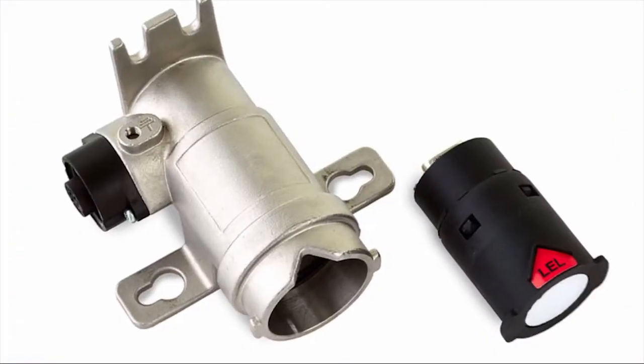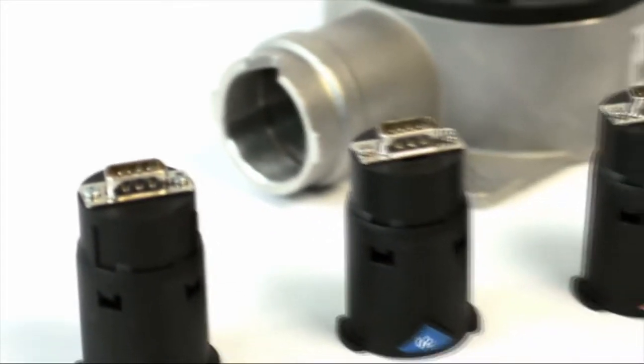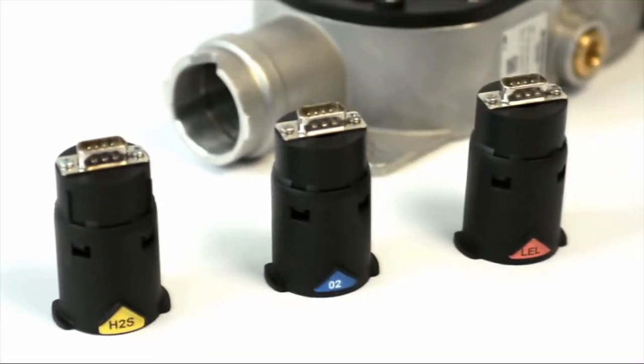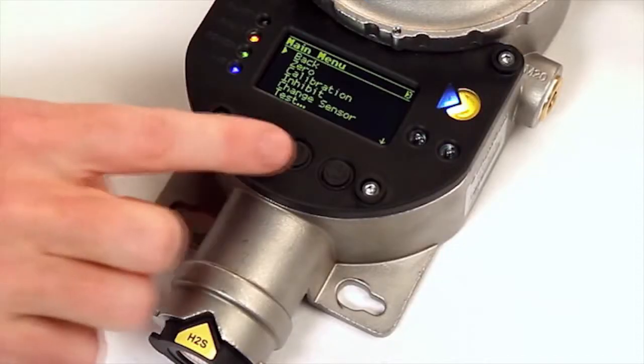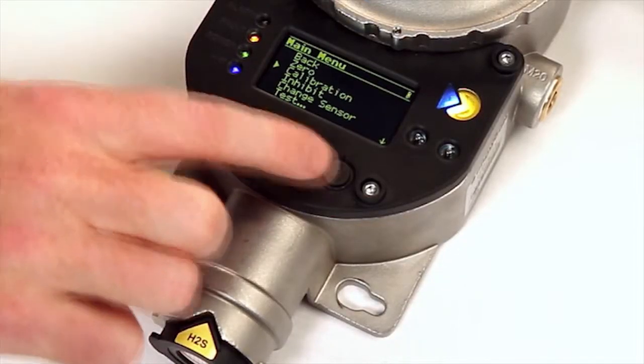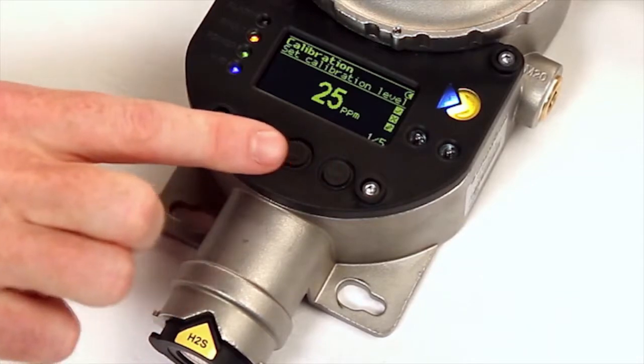X-Guard IQ uses smart sensor modules for a variety of flammable, oxygen or toxic gases. It auto configures to the appropriate gas type, range, units and alarm levels, the specification which is carried by the sensor module itself.